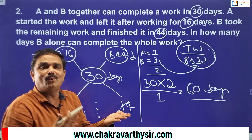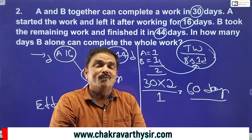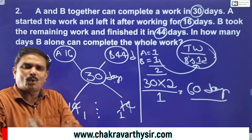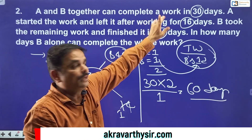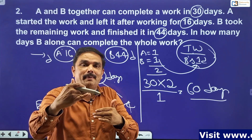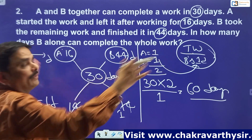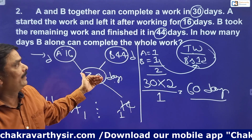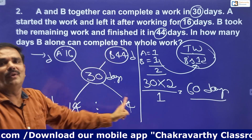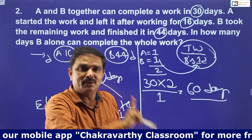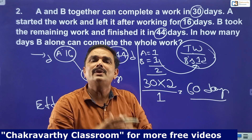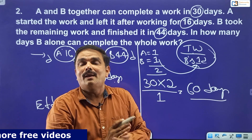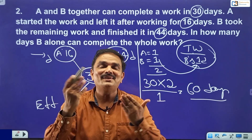Isn't that simple? Without writing anything on paper, you can do this mentally. Once you decide to apply the rule of alligation: 30 in the middle, 44 and 16 on the sides, ratio is 1 to 1. A and B each do 1 unit per day, together 2 units per day, in 30 days that's 60 total. B's efficiency is 1, so 60 divided by 1 gives 60 days.